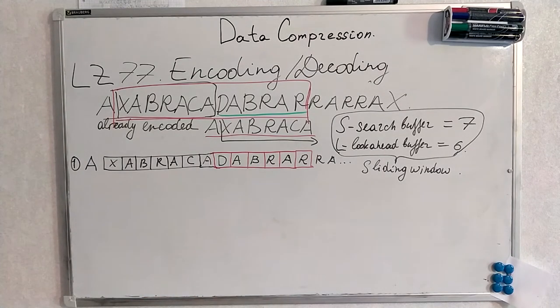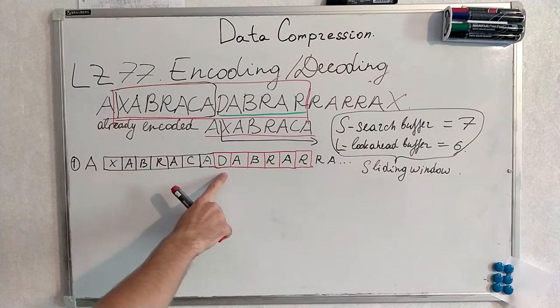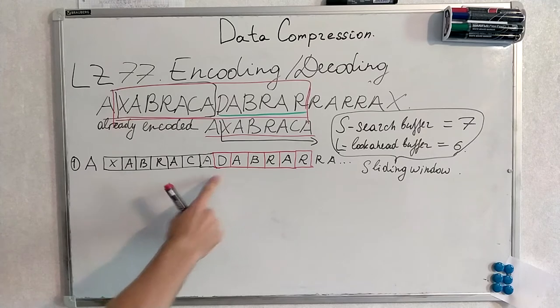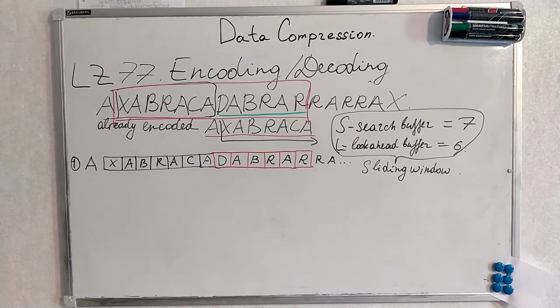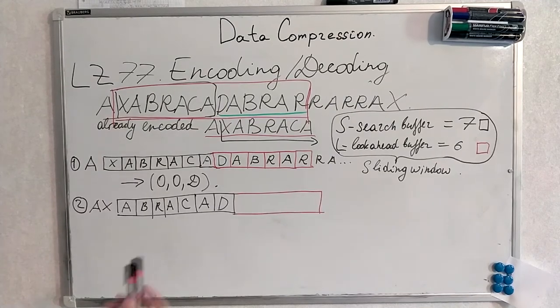Now we are going to proceed with our algorithm. Next symbol is D. Next symbol is D. And as we should do, we are looking for D in our search buffer. But we can't find it. Thus we encode that symbol didn't match. You see I have encoded it here.